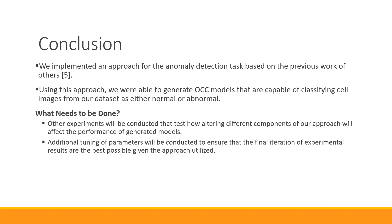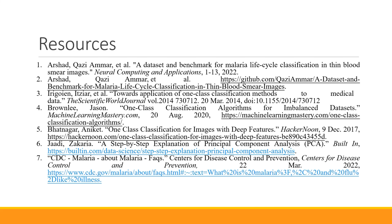In conclusion, we were able to implement an approach for the anomaly detection task based on previous work of others — there's a really cool article online with this approach if you're interested. We were able to generate different one class classification models that classify images as either normal or abnormal and compare performance between them. In the future, I'd like to explore other one class classification models within this approach. Two ablation studies still need to be completed for the final paper, examining the performance effects of altering the ResNet and the feature transformation steps.